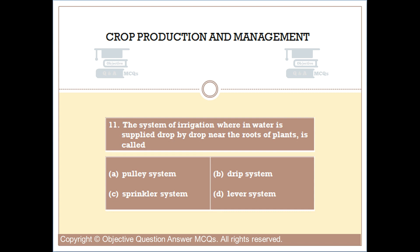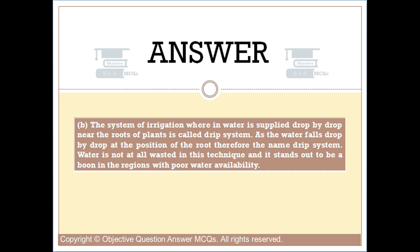Question number ten: the system of irrigation wherein water is supplied drop by drop near the roots of plants is called option A: pulley system, option B: drip system, option C: sprinkler system, option D: lever system. The right answer is option B. The system of irrigation wherein water is supplied drop by drop near the roots of plants is called the drip system.